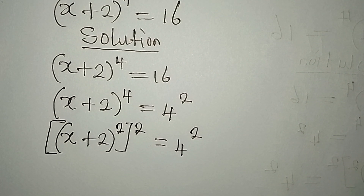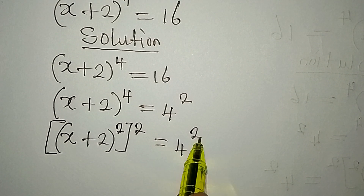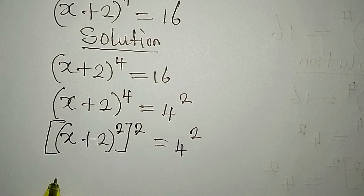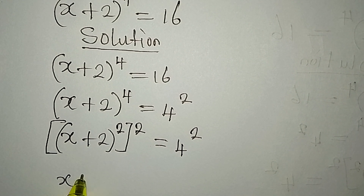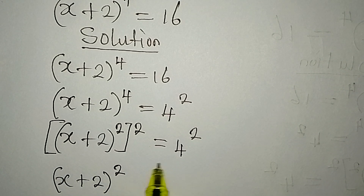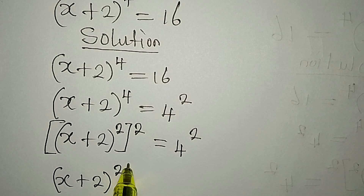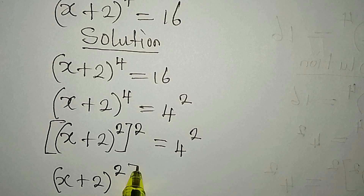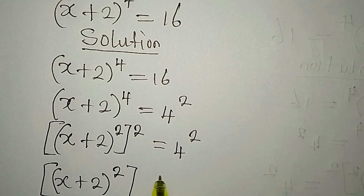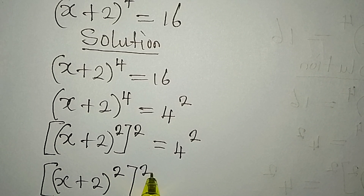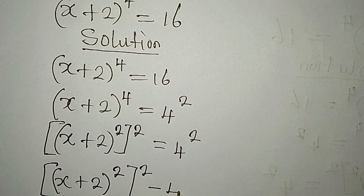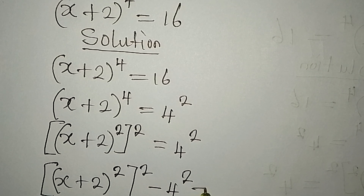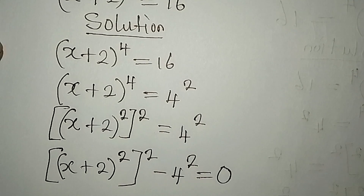The next step is to bring 4 to the power of 2 to the left, so we have (x plus 2) squared, raised to the power of 2, minus 4 to the power of 2, all equal to zero.